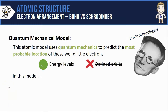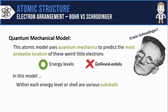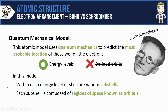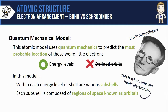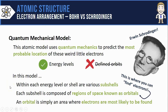Let's close the video with three key descriptions of what this model looks like. Within each energy level — sometimes called shells — there are sub-shells or sub-levels. Each of those sub-shells is then composed of regions of space known as orbitals, and that's an important new term for the quantum mechanical model. It's inside these orbitals where we find electrons. An orbital is simply an area — a region of space — within which electrons are most likely to be found.